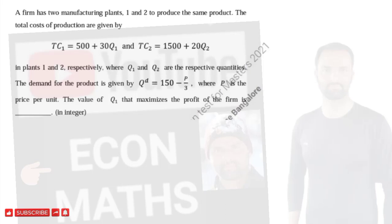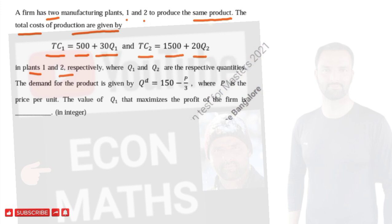In this video we will try to solve a problem that was asked in JM Economics paper of 2021. The question is: a firm has two manufacturing plants, one and two, to produce the same product. The total cost of production are given by TC1 = 500 + 30q1 and TC2 = 1500 + 20q2 in plant one and plant two respectively, where q1 and q2 are the respective quantities.